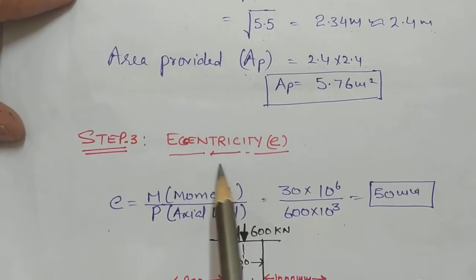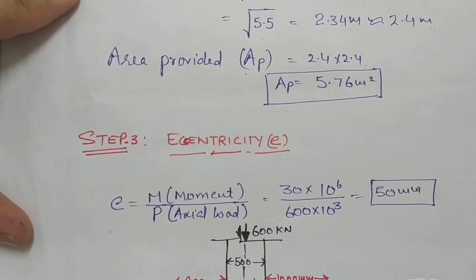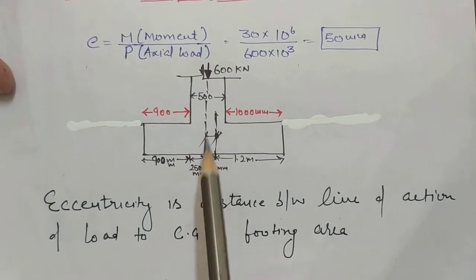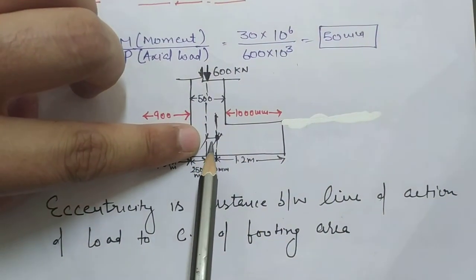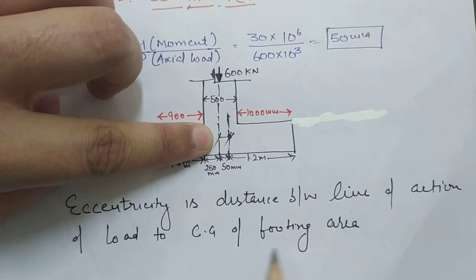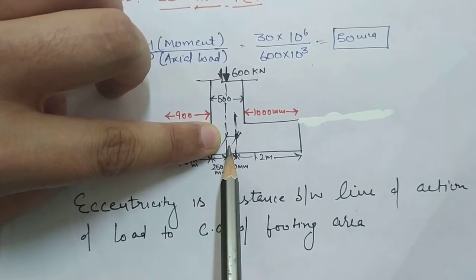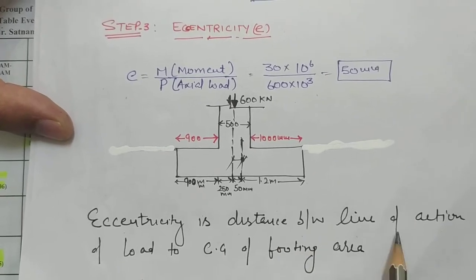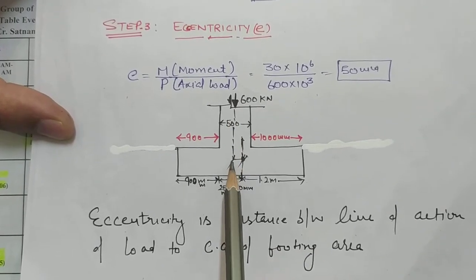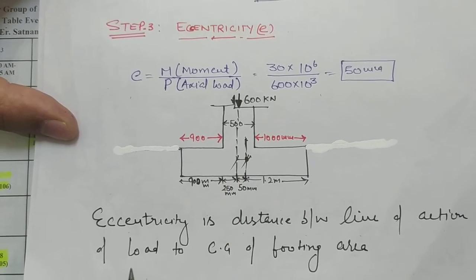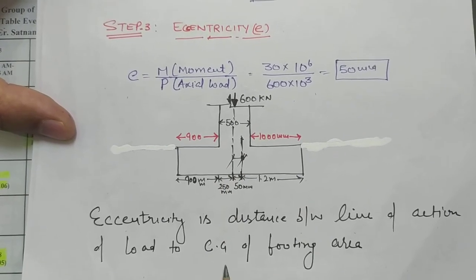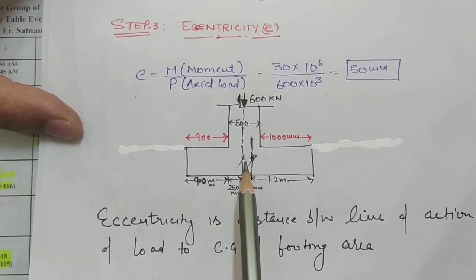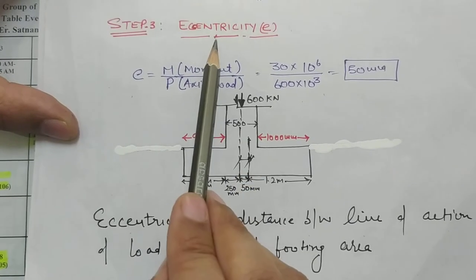Step three is eccentricity. Eccentricity is the distance between the line of action of the load and the CG of the footing area. The line of action is the line of the 600 kilo Newton load, and the CG lies at the center of the footing. The distance between these two is known as eccentricity.